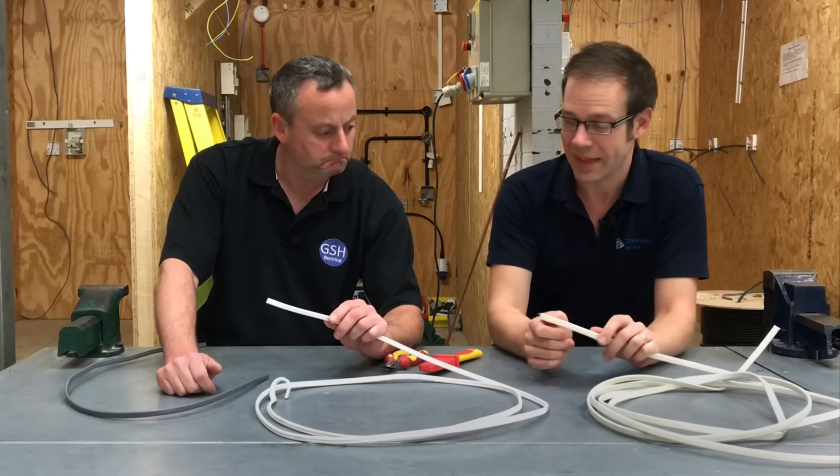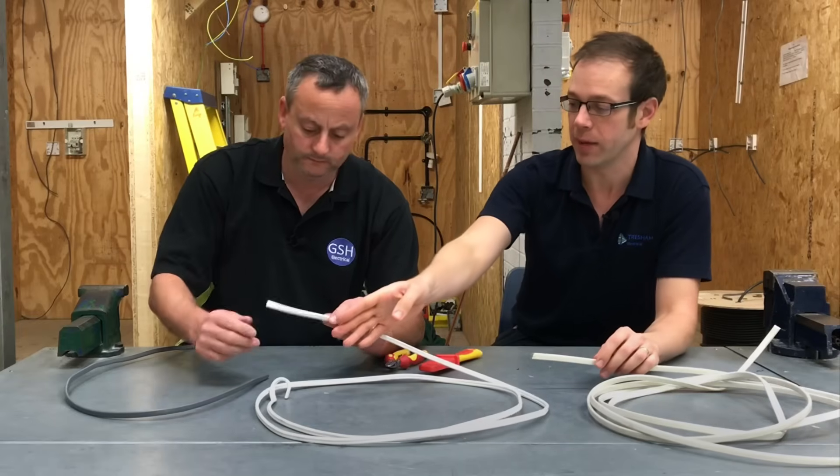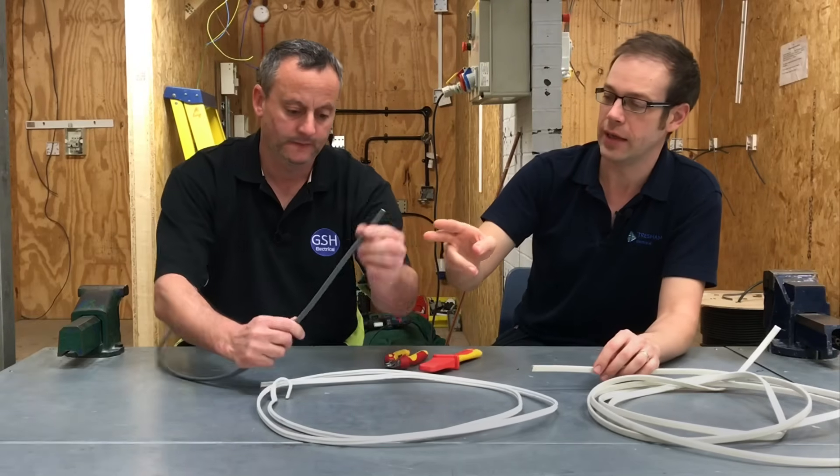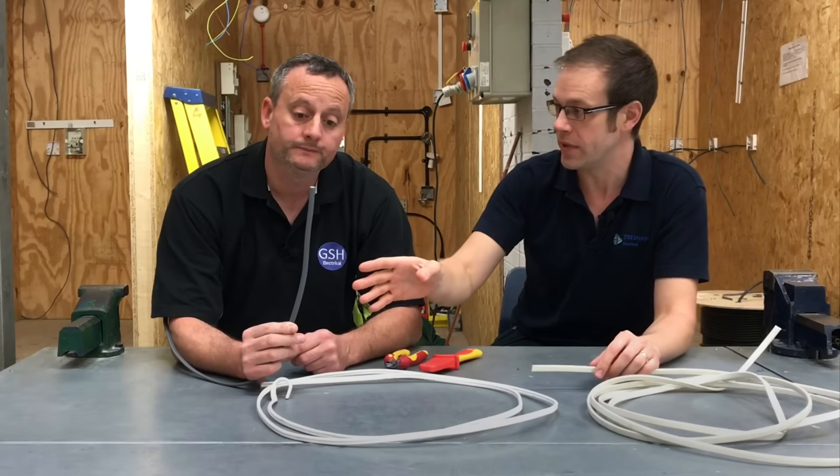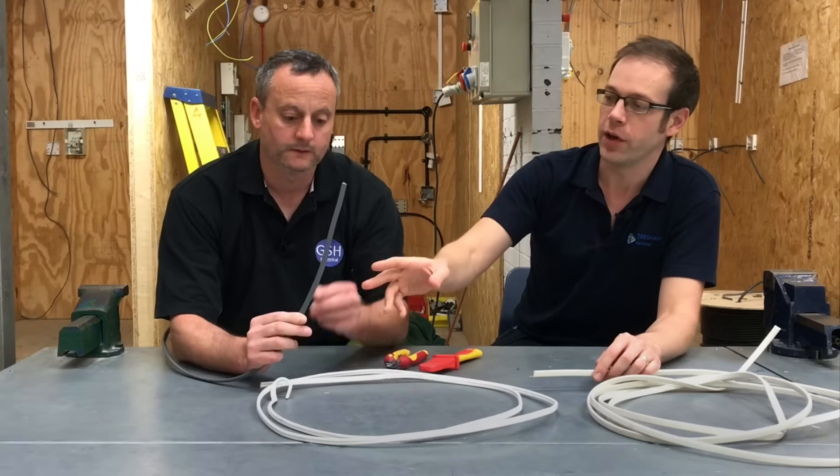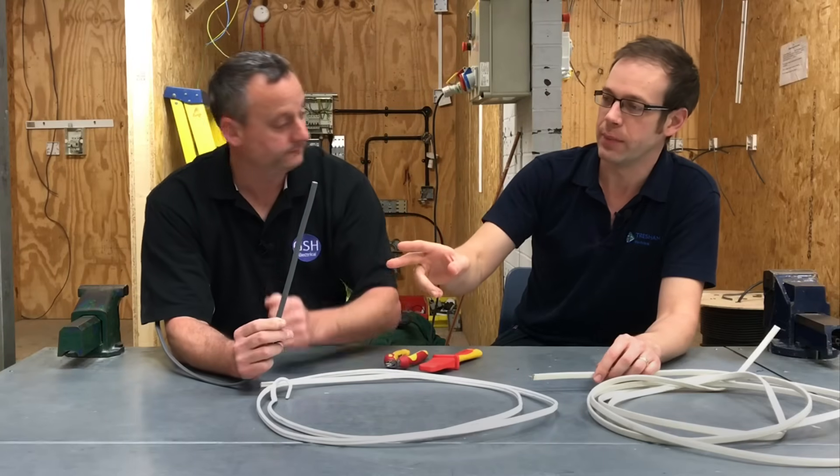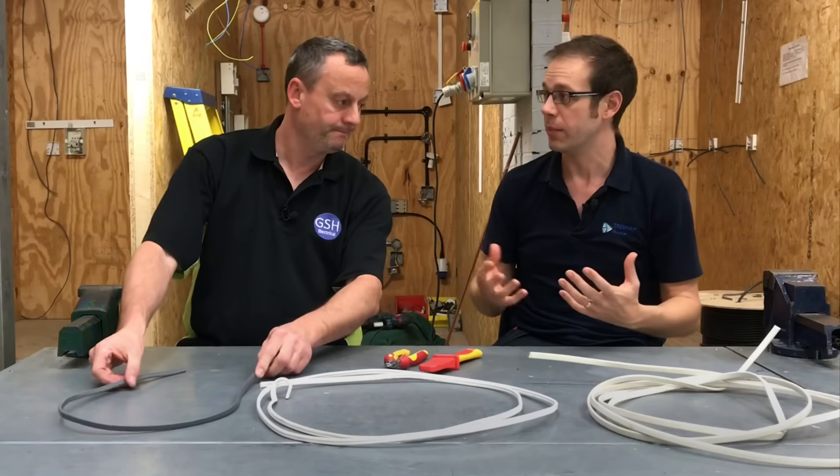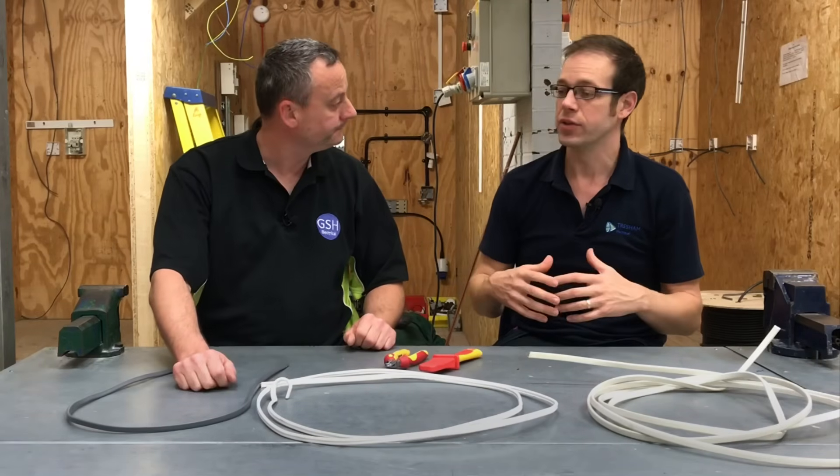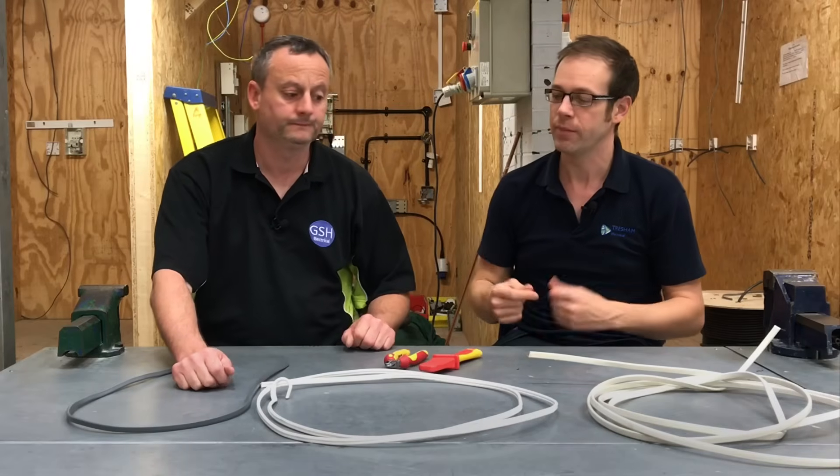Now what that means is, if we go back to our PVC cable, if in a property, whether it be perhaps a residential property or whether it be perhaps a commercial property or something like that, if a fire breaks out and the PVC cables in that building start to burn, it starts to give off a lot of black smoke, which can make exiting the building very difficult. And also that smoke is not good for you. It's bad for people to breathe in.